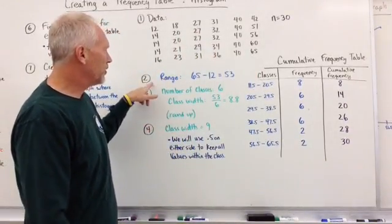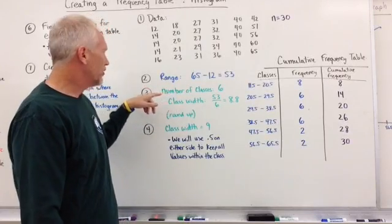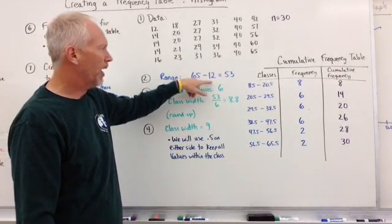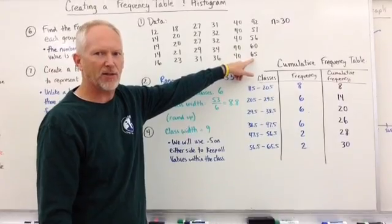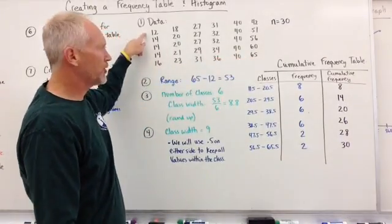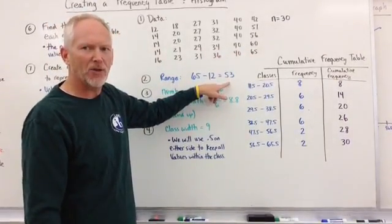And then what we do is step two. Again, we find the range. So the range is the high number minus the low number. The highest is 65 and the low is 12. So we get a range of 53.